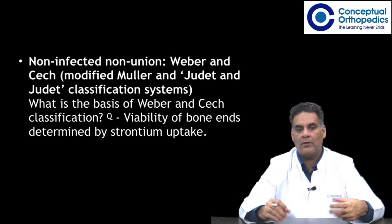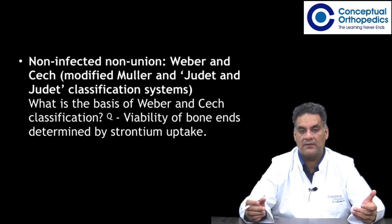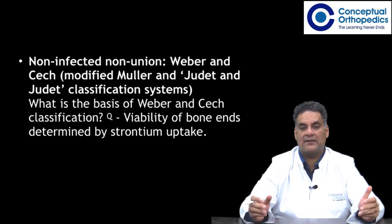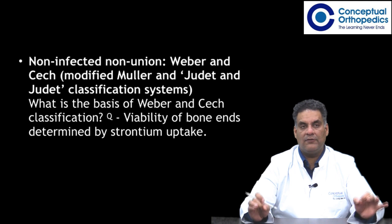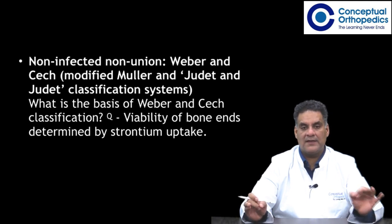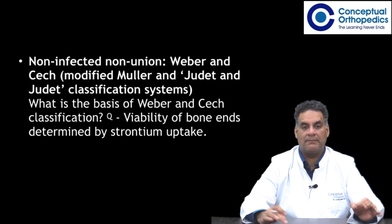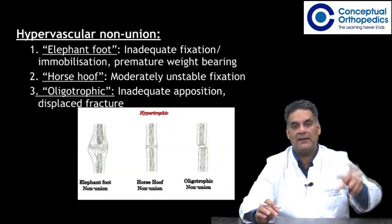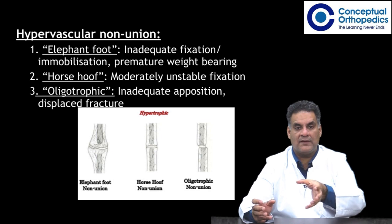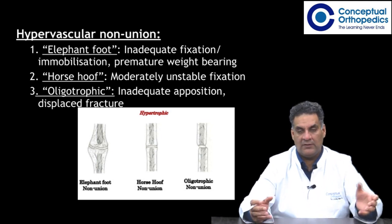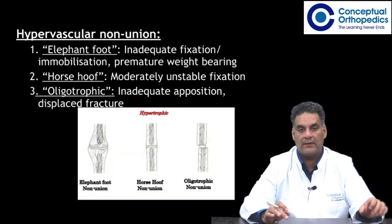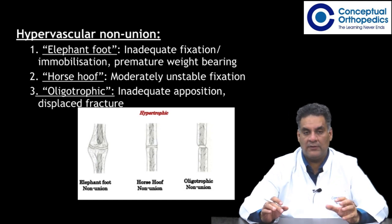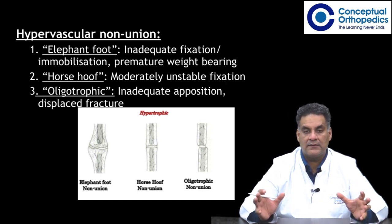For non-infected nonunion, Weber and Cech modified the Muller and Judet classification system. The Weber and Cech classification for non-infected nonunion talks about viability of the bone ends determined by strontium uptake. You can check the viability of the bone ends by strontium uptake, looking at whether you have a hypervascular or atrophic avascular nonunion. Weber and Cech gave this viability test by strontium uptake.